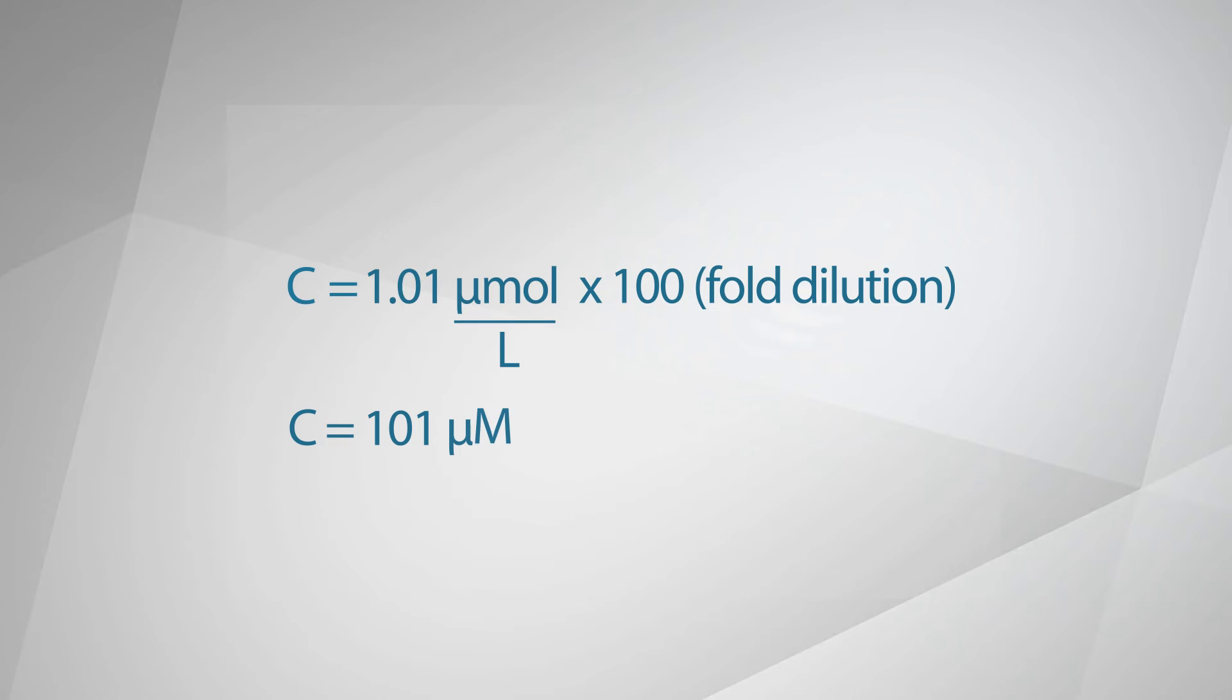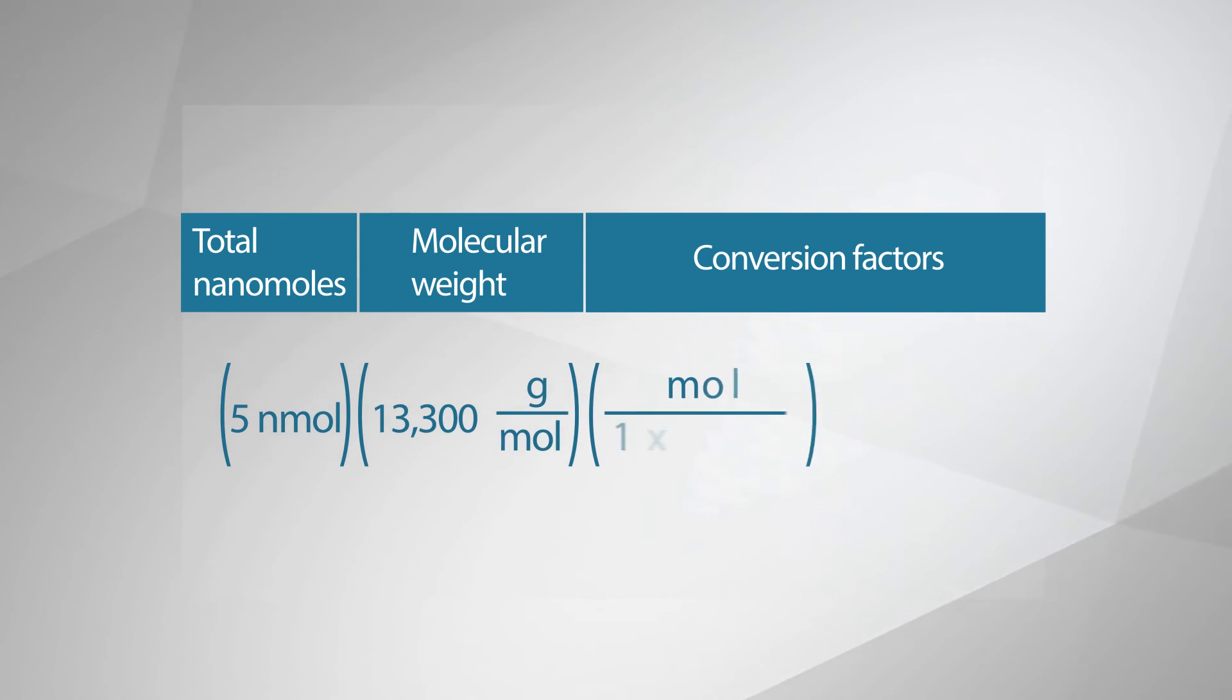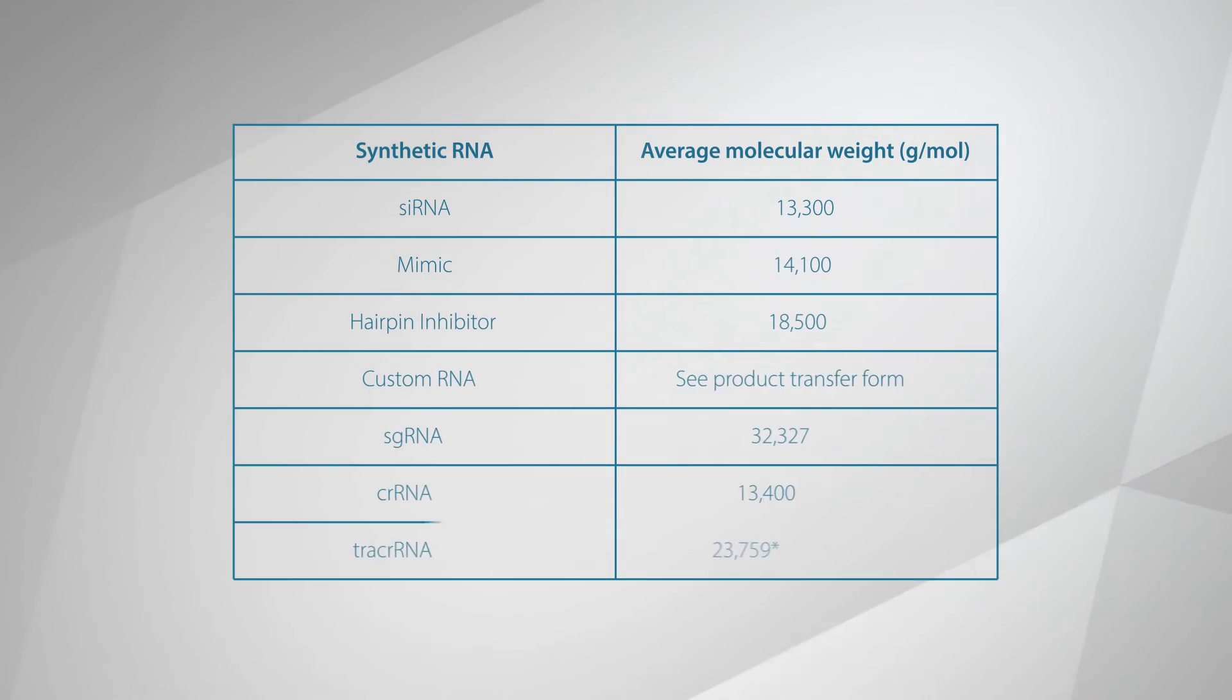If you need to convert from nanomoles to micrograms, multiply the number of moles by the molecular weight on the product transfer form or the average molecular weight for your oligo. Average molecular weights for synthetic RNAs are found in this table.